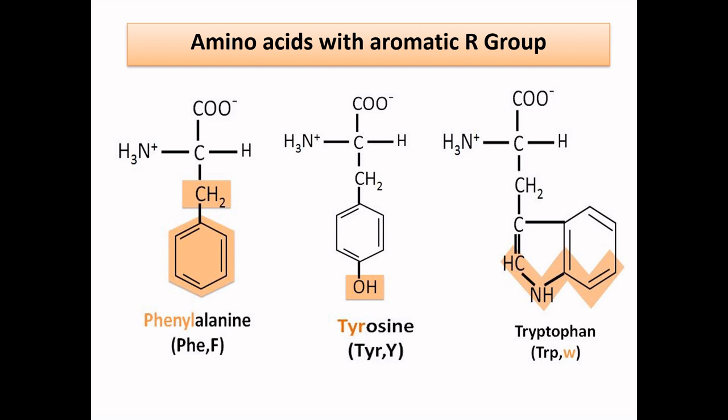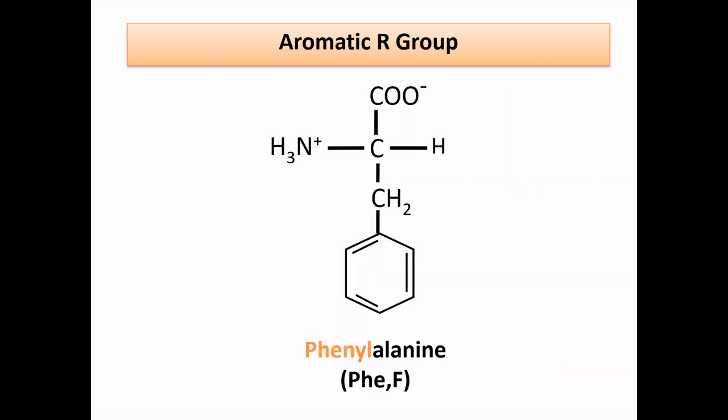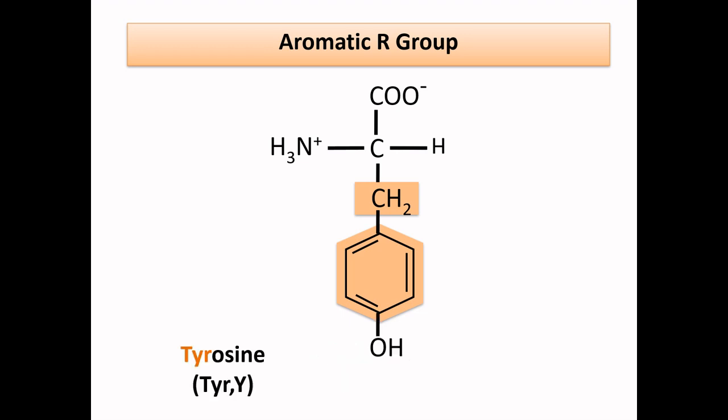Remember, all these amino acids' single-letter names are different from their name's first letter. Phenylalanine — if you remember the structure of alanine, you can see phenylalanine is similar to alanine with a phenyl group attached to it, so phenylalanine is simply alanine with a phenyl group. Tyrosine is similar to phenylalanine.